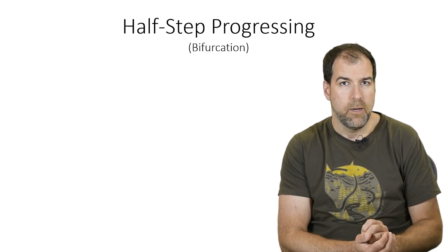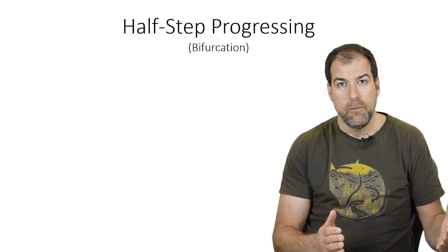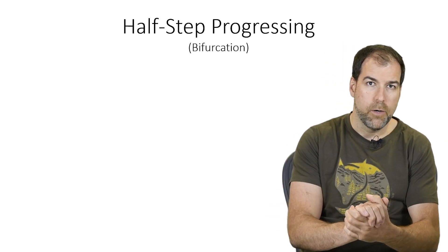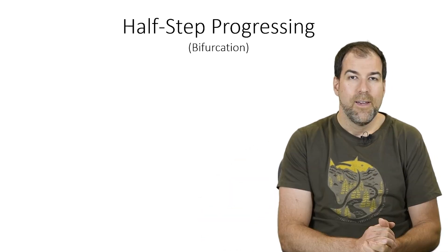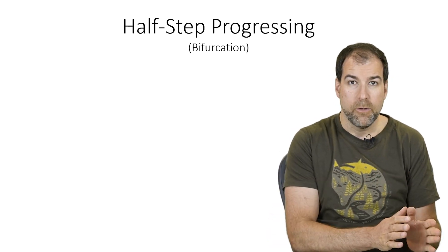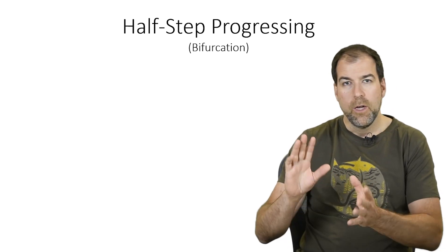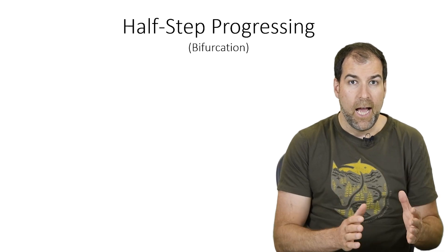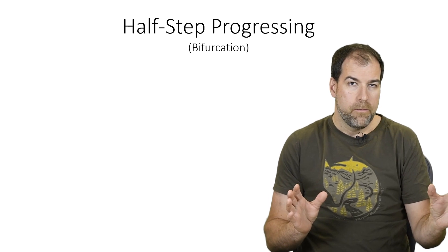There are two steps in half-step progressing. Typically when we do a monthly progress update, we grab the last update schedule, make a copy of it, input all our progress information, reschedule, and go. But there's a little more to it, because we don't only input progress information — we're often tweaking remaining work, rescheduling things, or doing mitigation. What half-step progressing does is divide progress from mitigation.